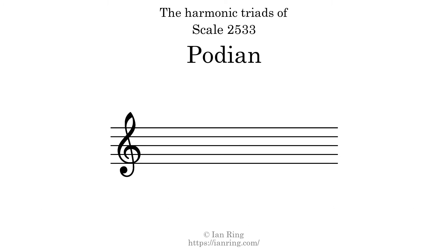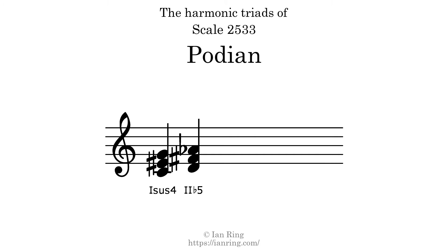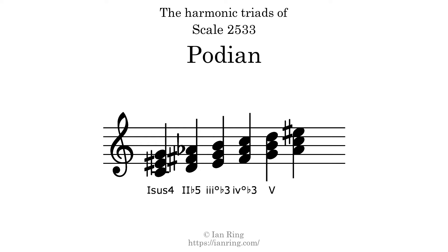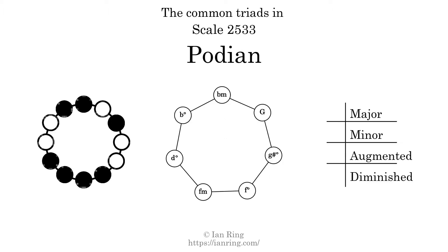Here are the harmonic triads present in this scale. Here are the common triads present in this scale. The diagram in the center is a graph of parsimonious voice leading between triads. There is one major triad. There are two minor triads. There are no augmented triads. There are four diminished triads.